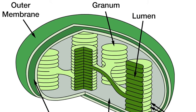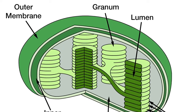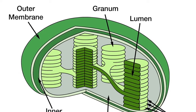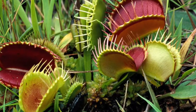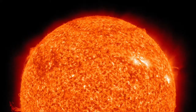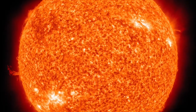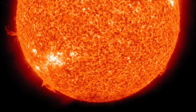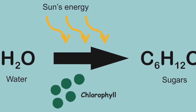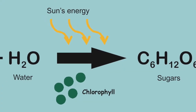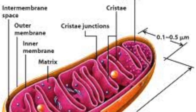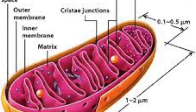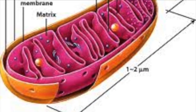Chloroplasts. Chloroplasts are an organelle found only in plants. They make food from sunlight through a process called photosynthesis. Like mitochondria, they also have a high surface area to volume ratio.